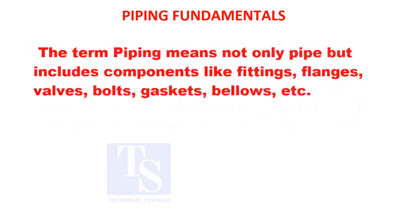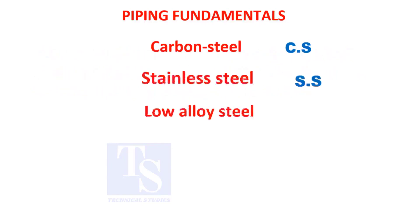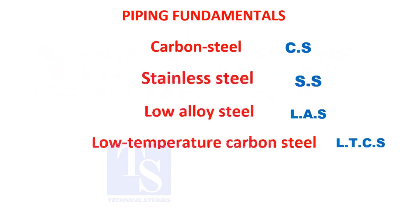The term piping means not only pipe, but includes components like fittings, flanges, valves, bolts, gaskets, bellows, etc. Generally used piping materials are carbon steel, stainless steel, low alloy steel, and low temperature carbon steel.